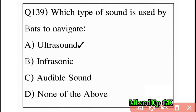Next question: which type of sound is used by bats to navigate? Option A: ultrasound, Option B: infrasonic, Option C: audible sound, Option D: none of the above. The answer is Option A: ultrasonic.